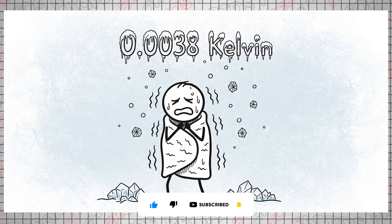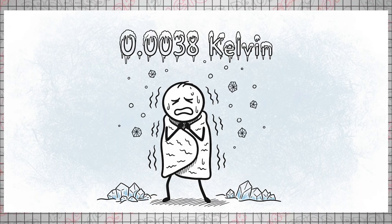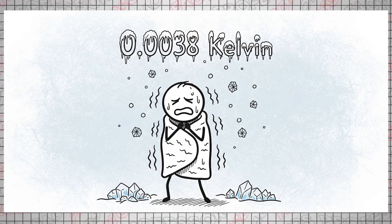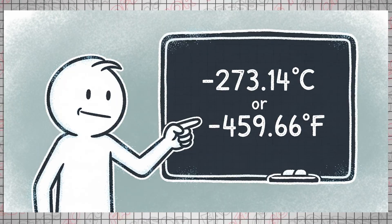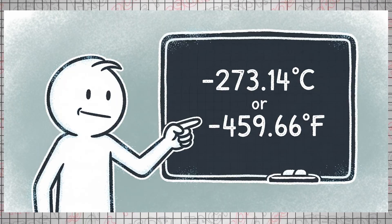On the flip side, the coldest human-made temperature dipped to a mere 0.0038 kelvin, equivalent to minus 273.14 degrees Celsius or minus 459.66 degrees Fahrenheit.